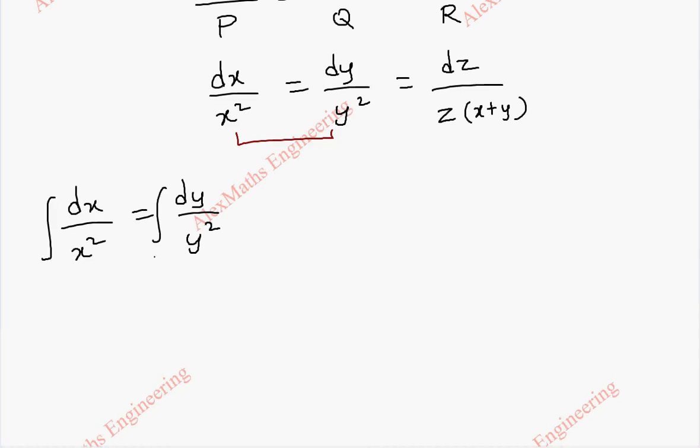We can go for integrating this. On integration it is x power minus 2 plus 1 by minus 2 plus 1. So, finally it is x power minus 1 by minus 1. So, I am writing directly minus 1 by x and in the same way this is minus 1 by y plus c1.